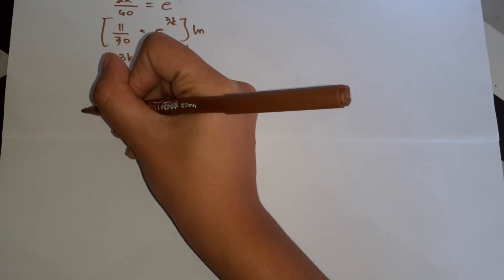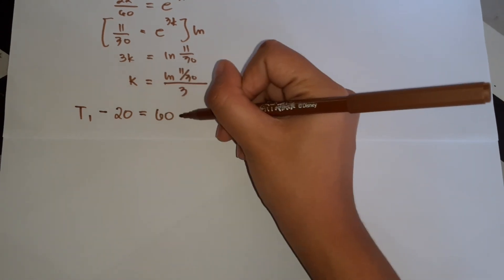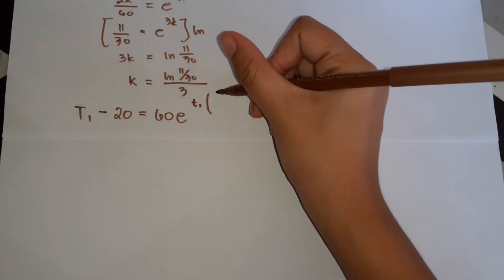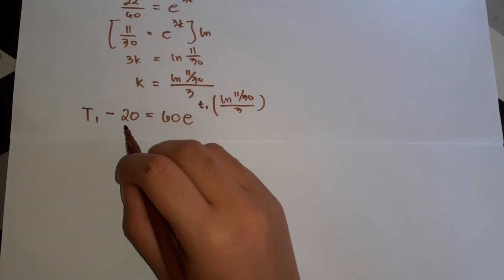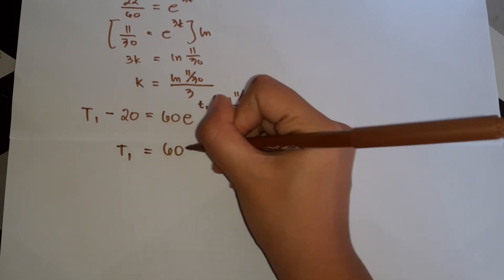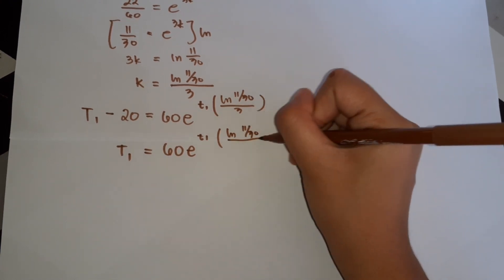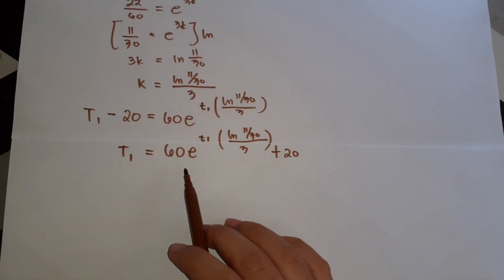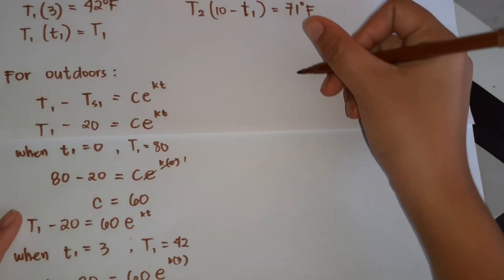Next we substitute our k back into the formula. We have T1 minus 20 equals 60 times e raised to t1 times ln(11/30) divided by 3. Solving for T1: T1 equals 60 times e raised to t1 times ln(11/30) over 3, plus 20. This will be our working equation for the outdoor environment.